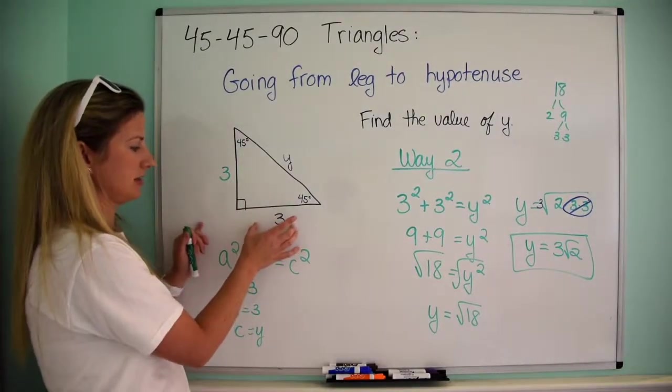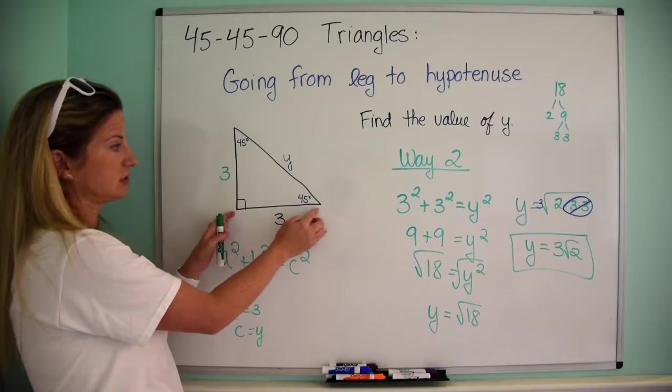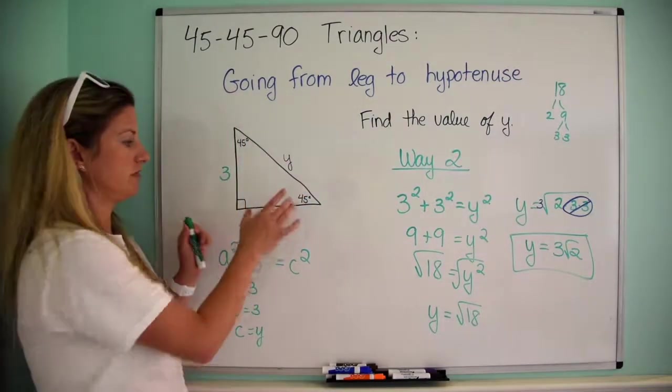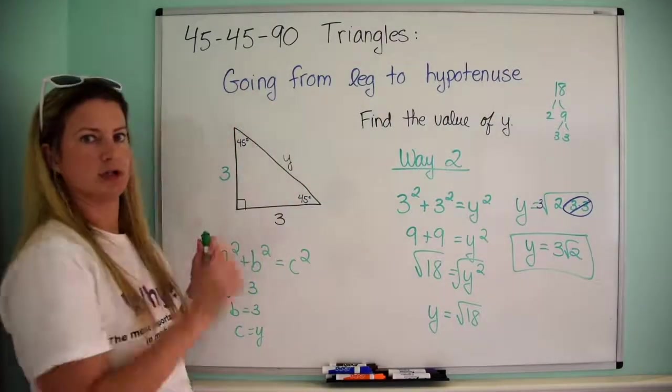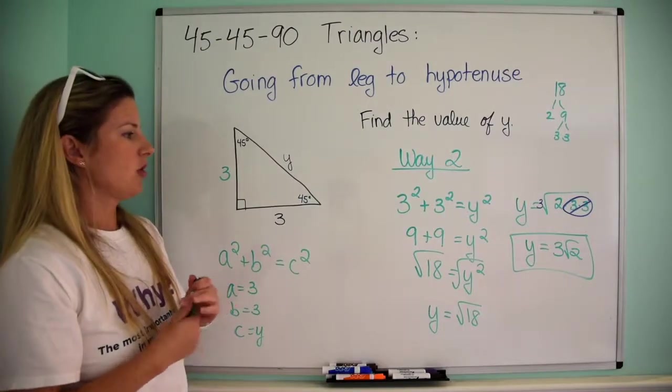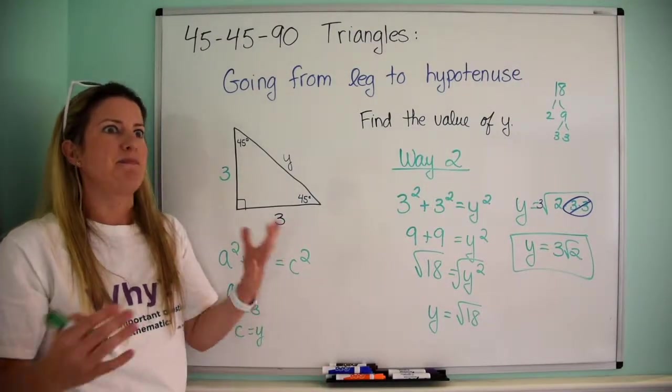And that was the answer because remember that the special relationship is if the leg is 3 in a 45-45-90, the hypotenuse is just 3 root 2. So if this were 8, 8 root 2; if this were 12, 12 root 2; if this were 27, 27 root 2, right?